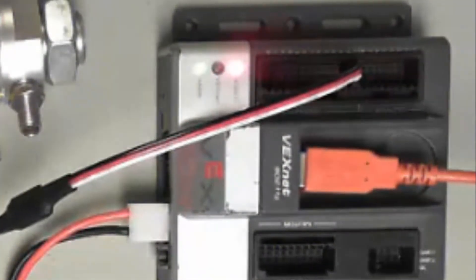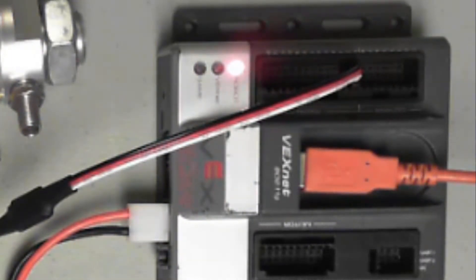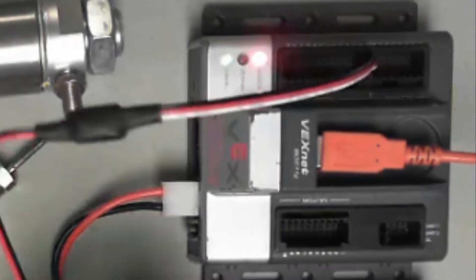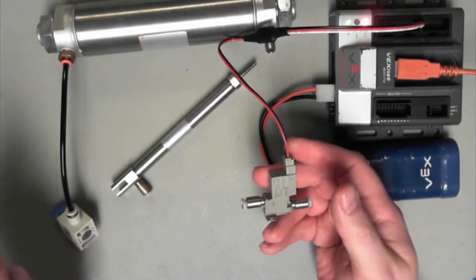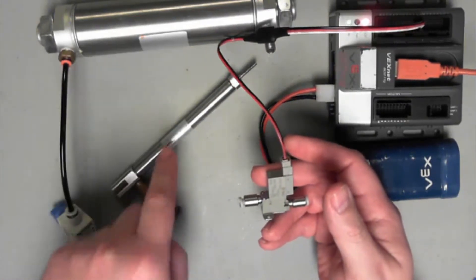So I'm plugged into digital input 1, and I'm going to go into motors and sensors setup here in a minute. I'm going to turn that into a digital out instead of a digital in. Now all we have to do is connect our solenoid up to our reservoir and then to our cylinder.